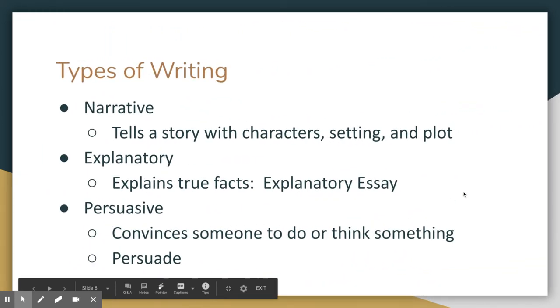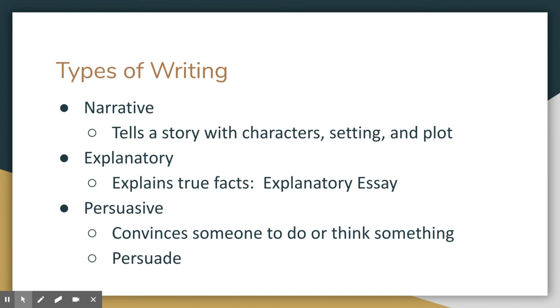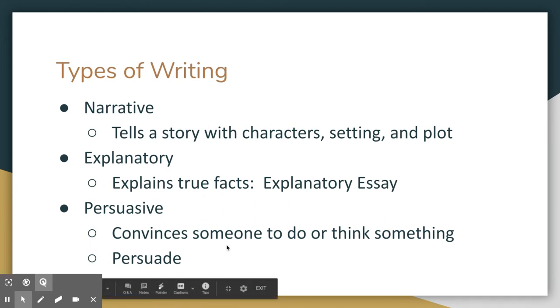We're going to be talking about three different types of writing for essays this year. We're going to be talking about narrative writing, which tells a story, usually with characters, setting, and plot. And explanatory writing, which explains true facts, such as an explanatory essay. This one you're talking strictly facts and you're explaining them with more information from the informational text. The last one is persuasive. This means that you're trying to convince someone to do or think a certain way. You're trying to convince them to agree with you, persuading them to agree. These are the three types of writing that we're going to be working on this year.